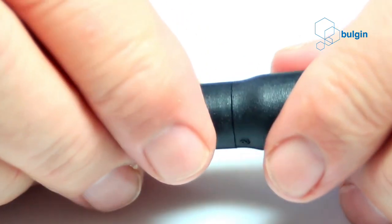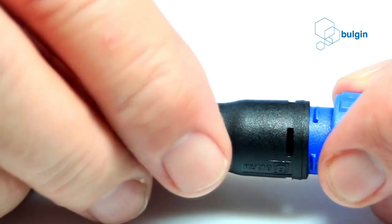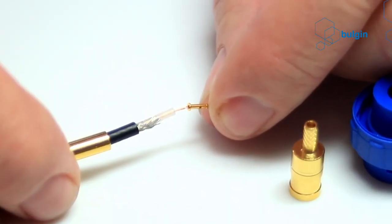Screw terminations are therefore ideal for connectors that will be installed in the field away from specialist workshops. They are also useful for equipment that will be repaired frequently.